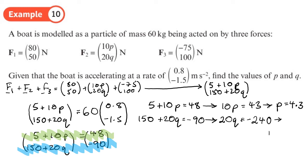And that will give us q equal to negative 240 divided by 20, which I believe will be negative 12. So we'll just highlight those: p is 4.3, q is negative 12.